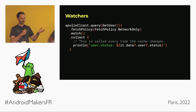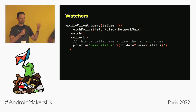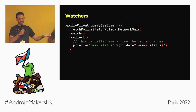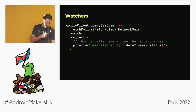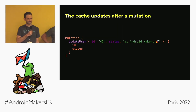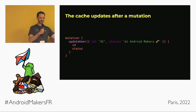Once everything is set up, you can do really cool things like watches. This is the key benefit of a normalized cache — you can use it as a single source of truth for your whole UI. Instead of manually tracking every change, you just watch the cache and get notified when something changes.